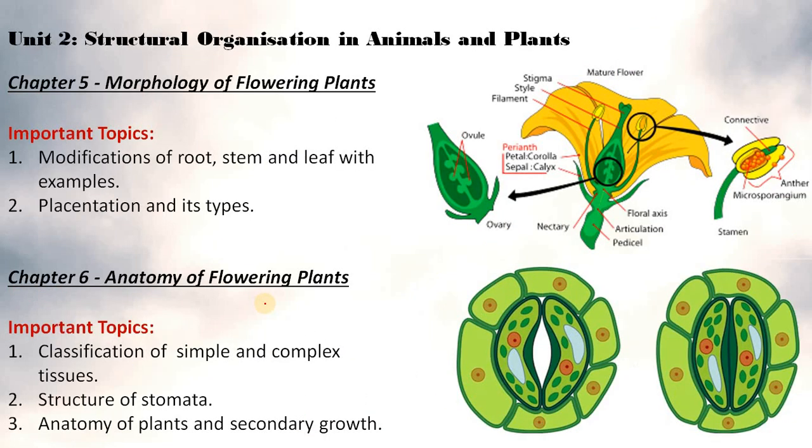Coming to Structural Organization in Animals and Plants that is Unit 2. Important topics of Chapter 5 Morphology of Flowering Plants include modifications of root, stem and leaves with examples, placentation and its types. Chapter 6 Anatomy of Flowering Plants important topics are classification of simple and complex tissue, structure of stomata, anatomy of plants and secondary growth.